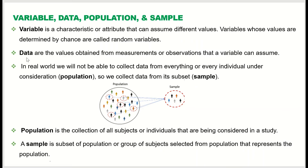Data are the values obtained from the measurement or observation that a variable can assume. For example, if the variable is temperature, the data could be 15 degrees Celsius or 17 degrees Celsius. If the variable is height of an individual, it may be 5 feet 2 inches or 4 feet 9 inches, and so on.